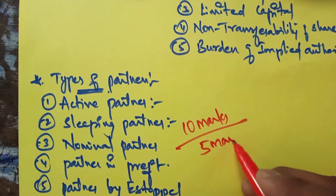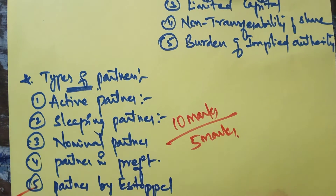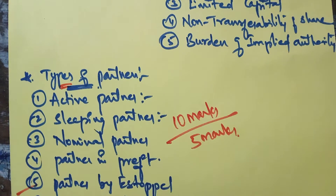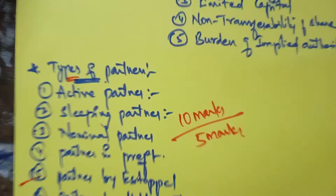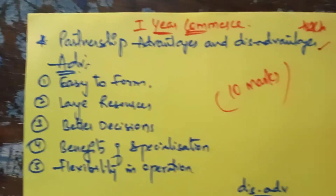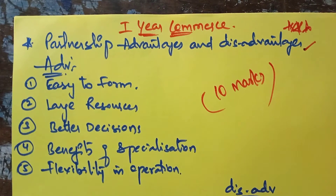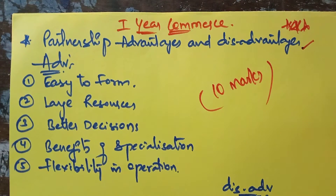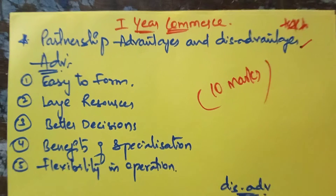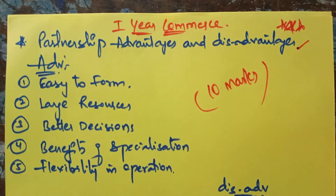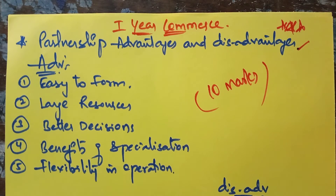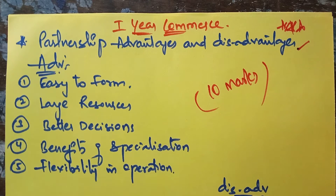If asked in 5 marks, write any 5 types of partners; if asked in 10 marks, write all types of partners. Before going to partners, let us go through the advantages and disadvantages. Partnership is a relationship between two or more persons who carry on business, conducted by all of them or any one of them acting for all.